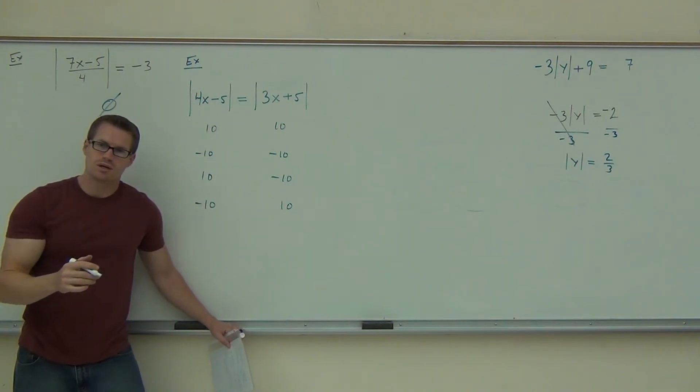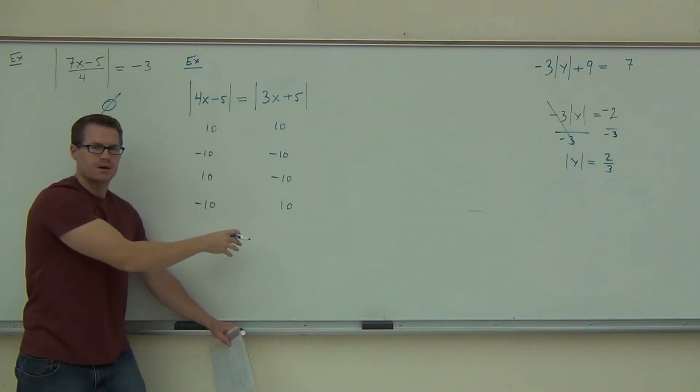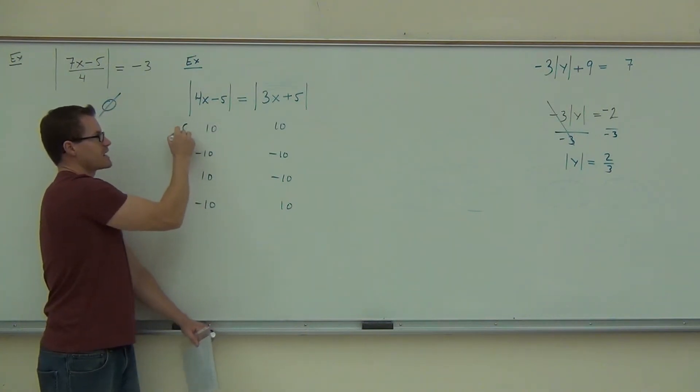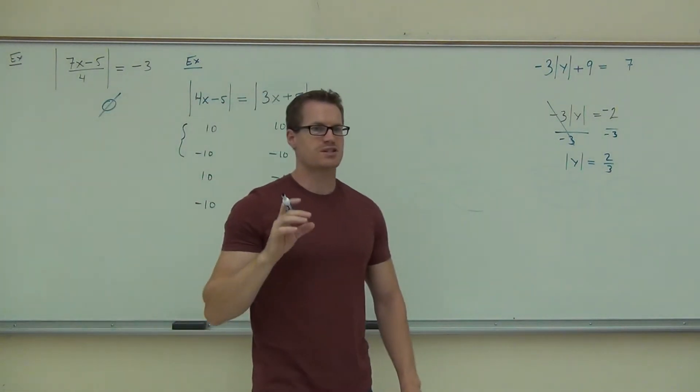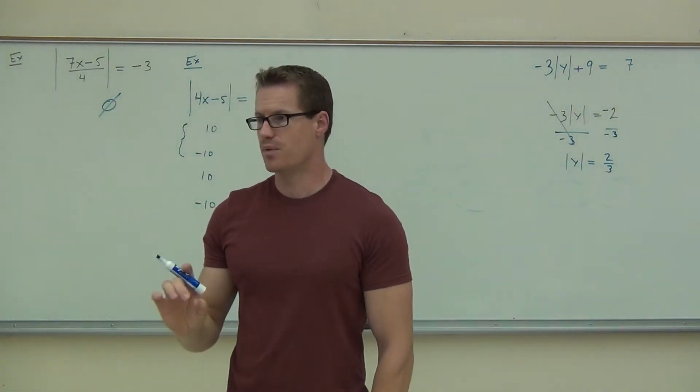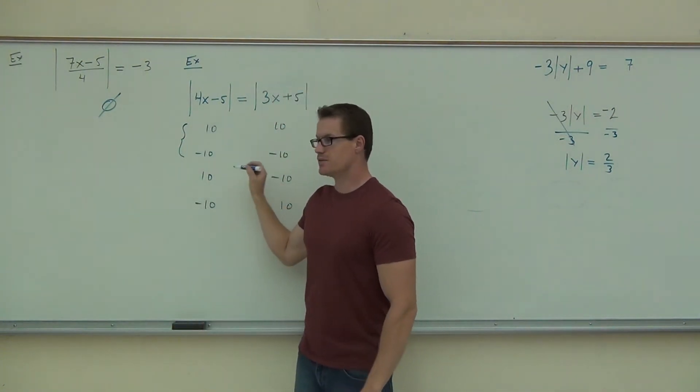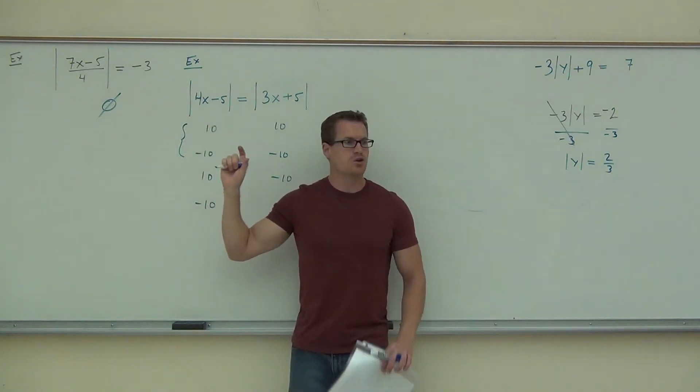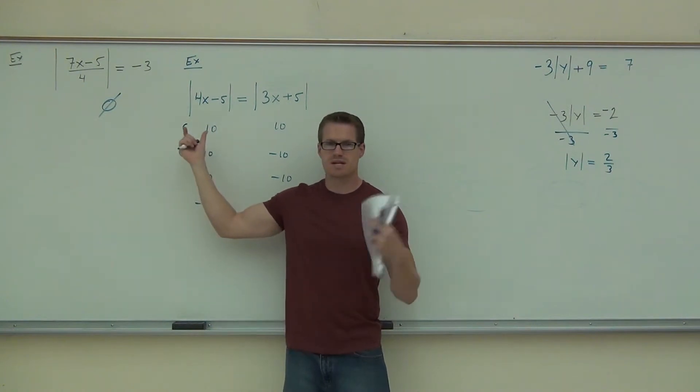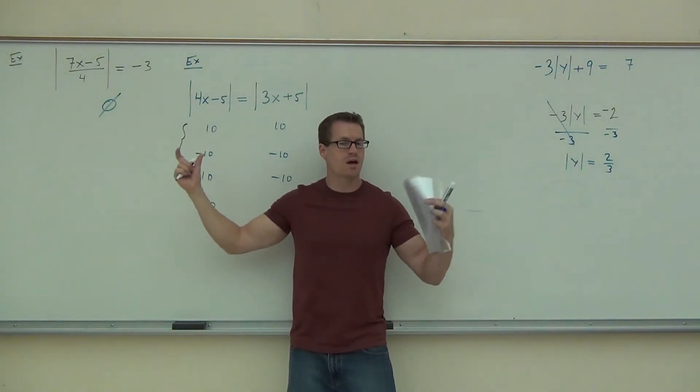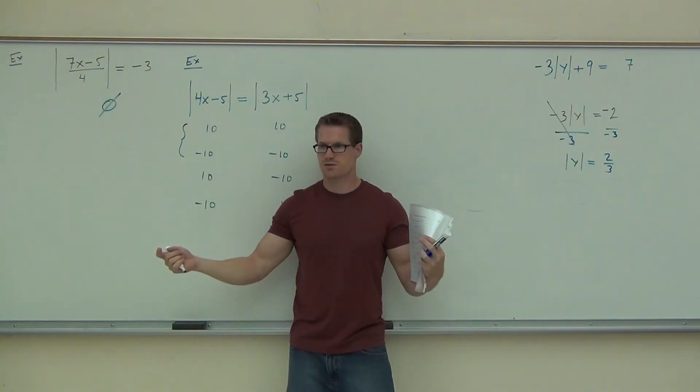If this is negative 10 and this is positive 10, would that still work? Absolute value of negative 10 is 10. Absolute value of positive 10 is 10. Do you see the four cases? There's actually only two cases. I want you to kind of see this for a second. I know I drew four of them up here, but these really are kind of the same idea.